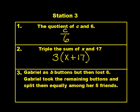Number three, Gabrielle has b buttons, but then lost six. Gabrielle took the remaining buttons and split them equally among her five friends. Pause the video, solve, come back when you're ready. So she had b buttons, she lost six, and she wants to divide them equally amongst her five friends. And some of you still like to write it this way, which is okay too. b minus six divided by five.